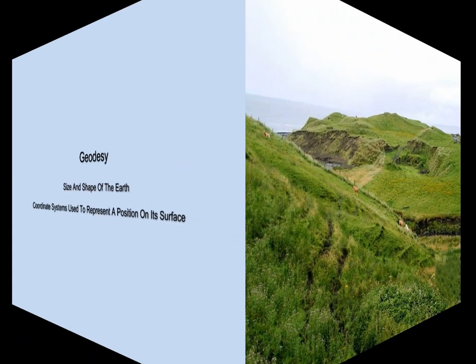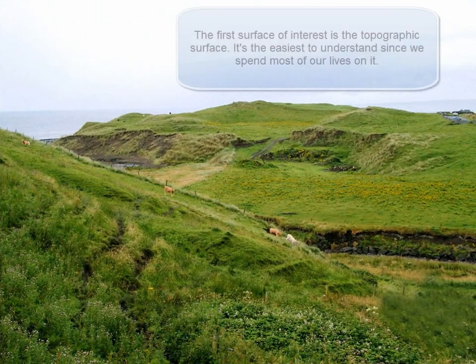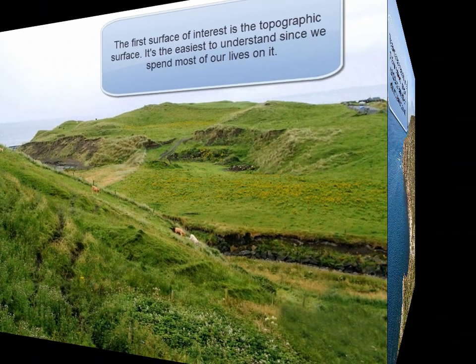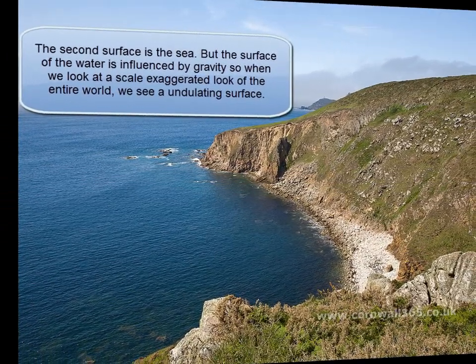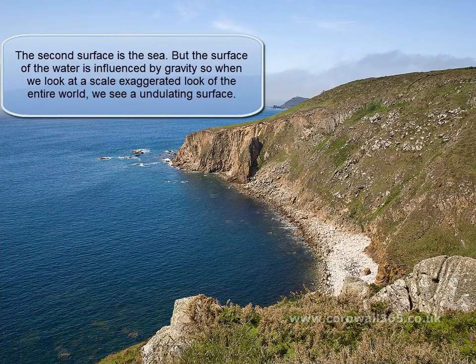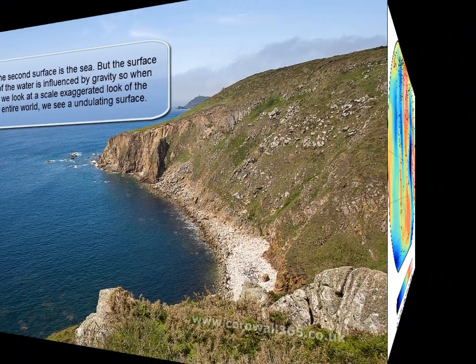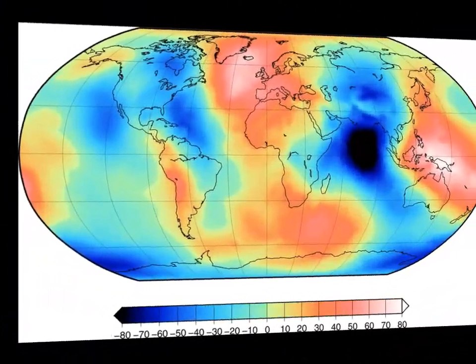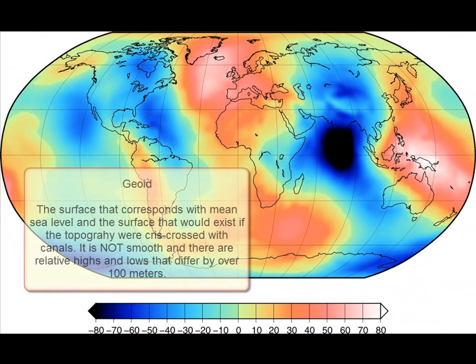There are actually three primary surfaces which we must deal with. Those are the actual or topographic surface and the surface of the sea, which is also called the geoid. It is a surface of equal gravity potential which closely matches the surface of the sea. It would also be approximated by the water surface that would develop if one could cut into the continents with canals that are connected to the sea. The geoid is an undulating surface with relative highs and lows that differ by over 100 meters.